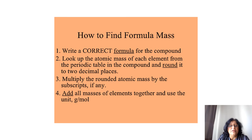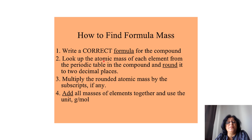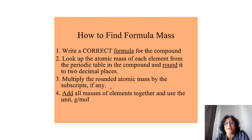To calculate the formula mass: write the correct formula of the compound, look up the atomic masses of each element from the periodic table and round to two decimal places, multiply the rounded atomic mass by the subscript if any, then add all the masses of elements together and use the unit U or grams per mole. Thank you.